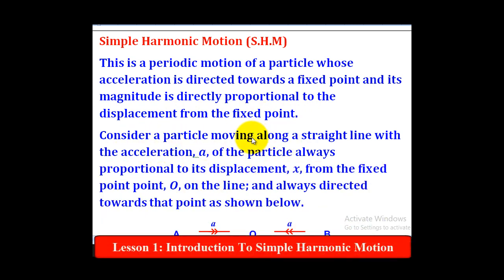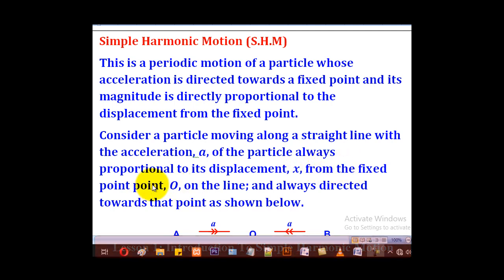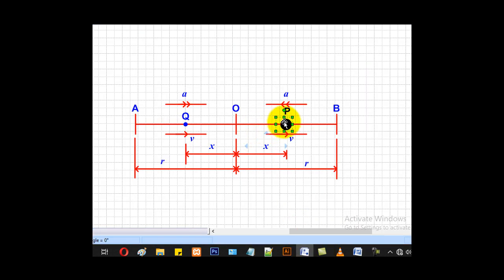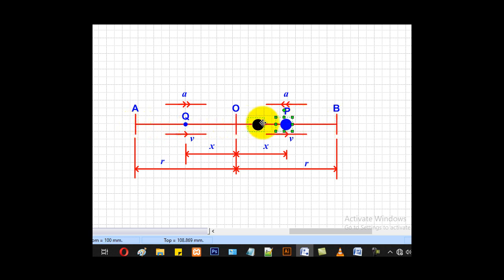Consider a particle moving along a straight line with acceleration of the particle always proportional to the displacement x from the fixed point O on the line, and always directed towards that point as shown below. When this particle performs simple harmonic motion, it can move to and fro — from A through O to B and back through O to A. Such motion is known as simple harmonic motion.